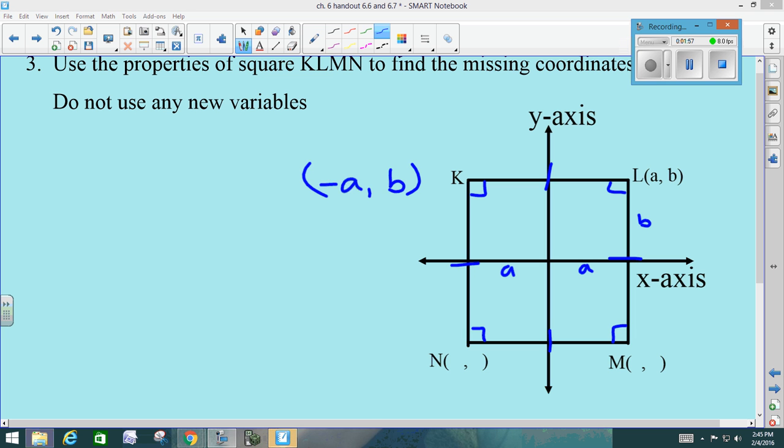N, down here in quadrant 3, starting from the origin, how far left do I have to move? Yeah, I've got to go negative. That tells me my direction, but I'm moving A in distance. And then I have to go down how far? B. Good. Negative is my down. B is the distance.